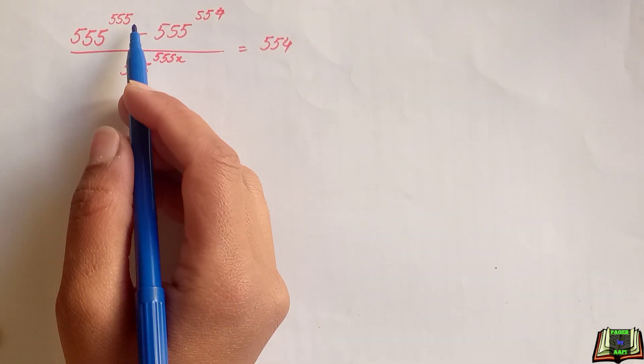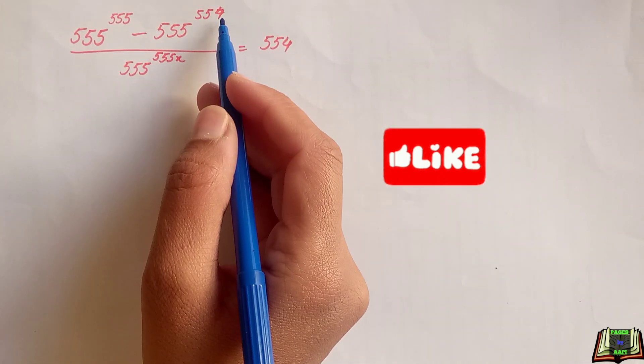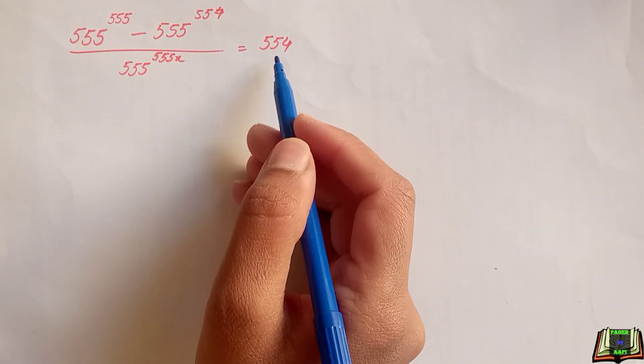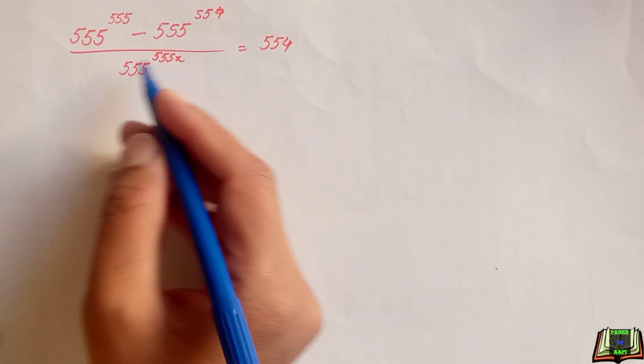If 555 raised to power 555 minus 555 raised to power 554 divided by 555 raised to power 555x is equal to 554. So let's get started.